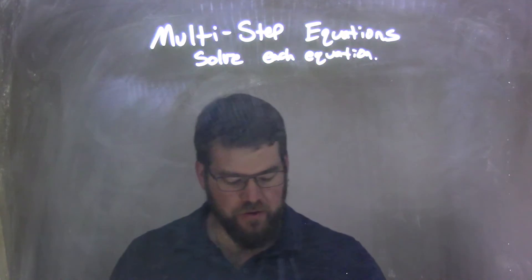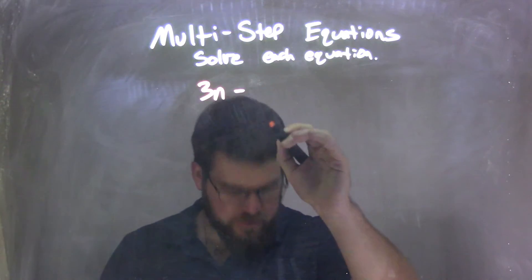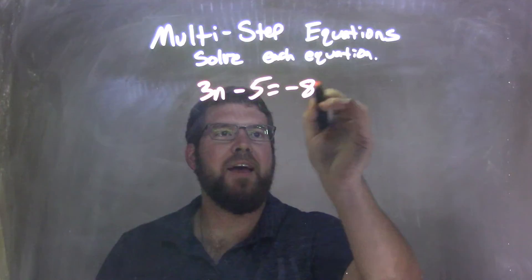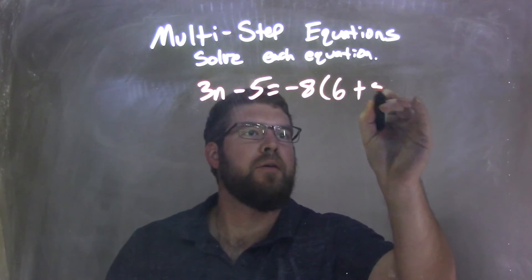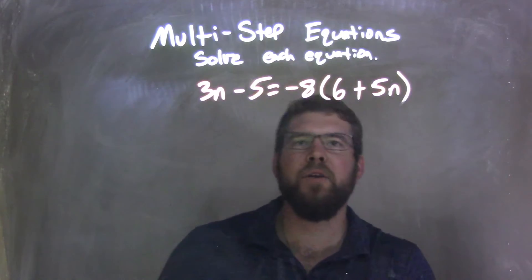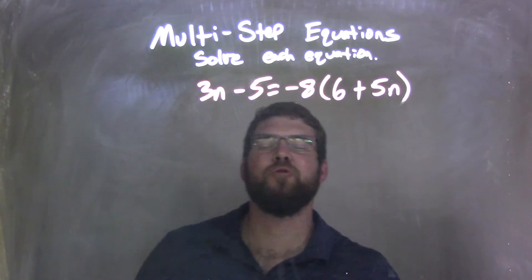So if I was given this equation, 3n minus 5 equals negative 8 times the quantity 6 plus 5n, what I want to do first is I want to distribute.